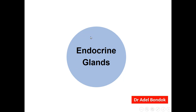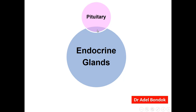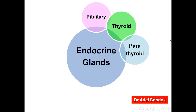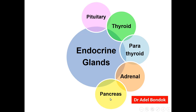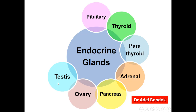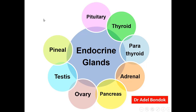What are the endocrine glands? The master endocrine gland is the pituitary gland. The other glands are: the thyroid gland, parathyroid glands, adrenal glands (we have two), the pancreas — specifically the islets of Langerhans — the ovary, the testes in the male, the pineal gland, and the thymus gland.